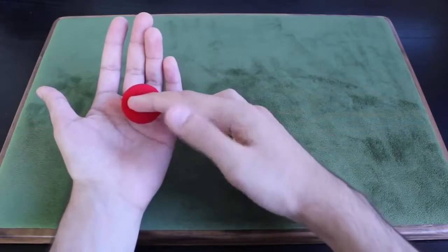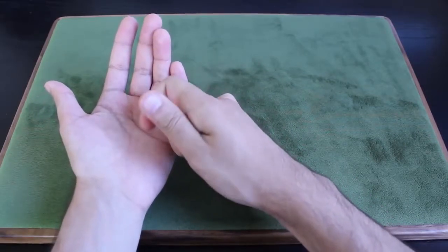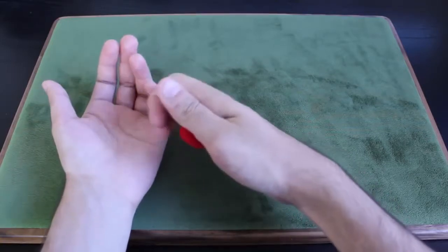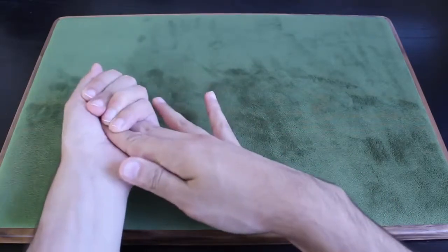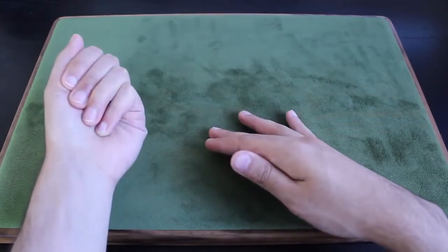You're going to do this quick move where you curl your right hand fingers in. You pinch the ball with your thumb, extend your fingers back out, and then close your fingers pretending to have grabbed the ball.